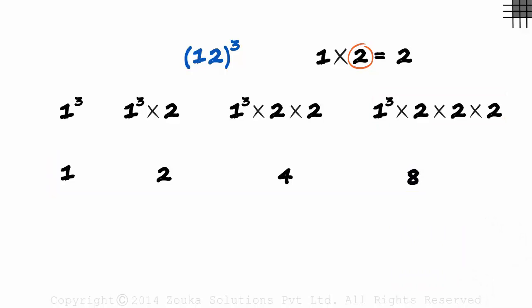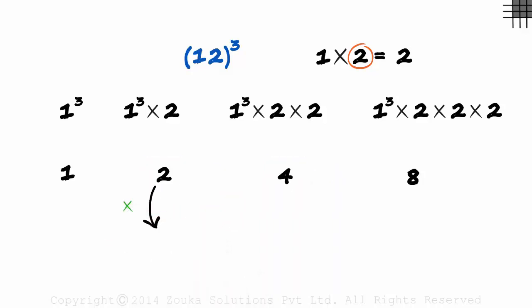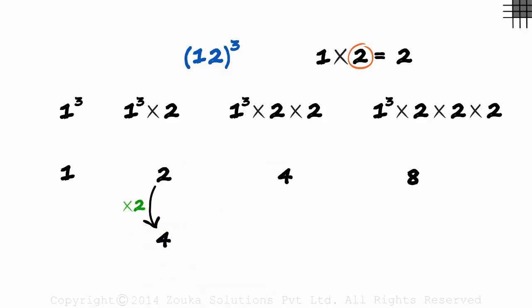Once this is done, we multiply the second and the third column numbers with 2. Multiplying 2 with 2 will give us 4, and multiplying 4 with 2 will give us 8.